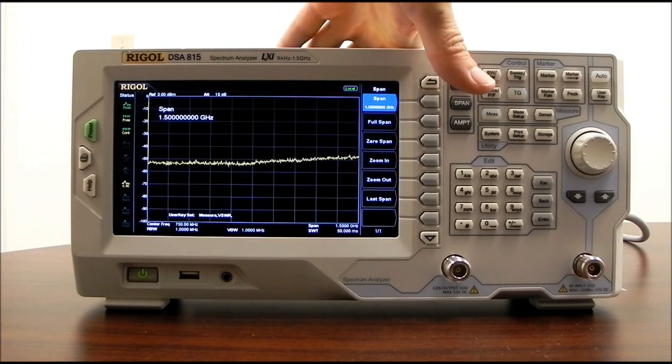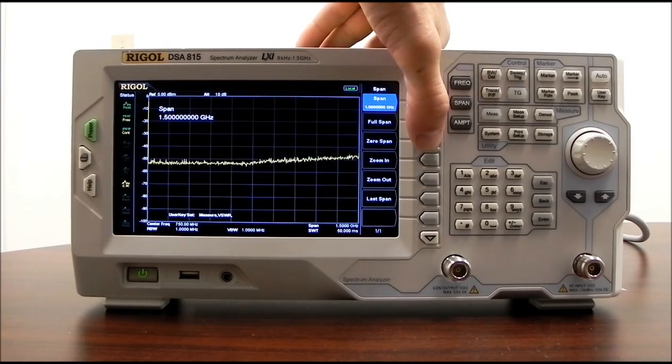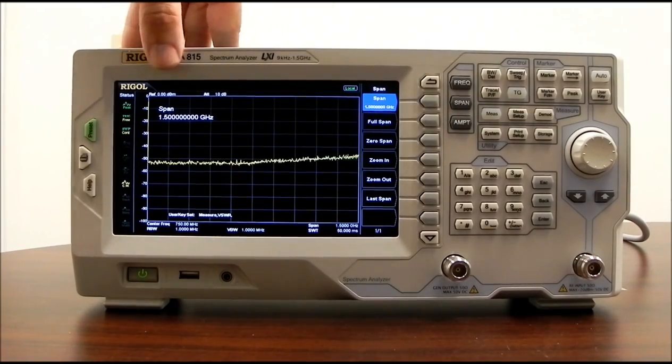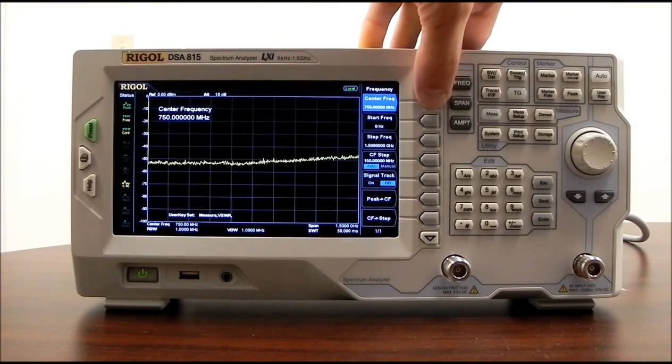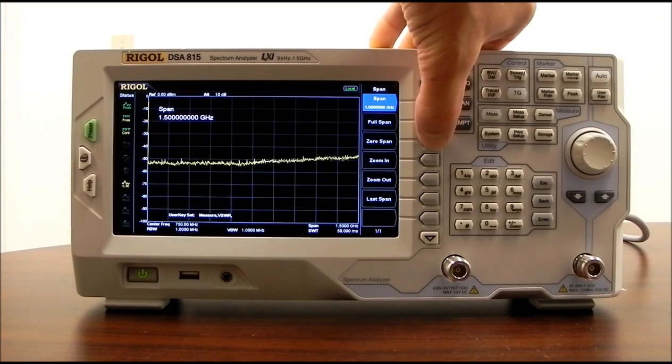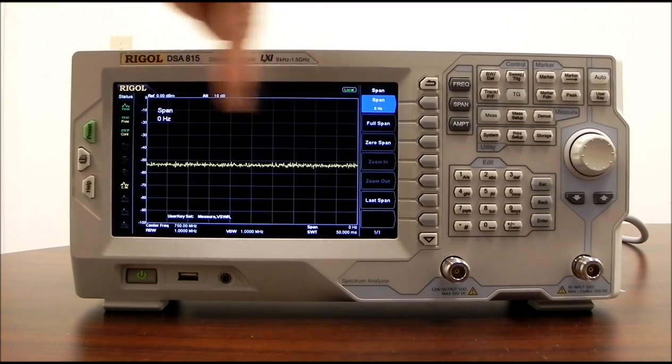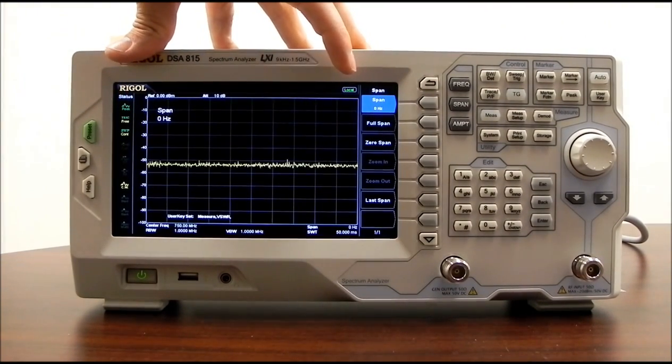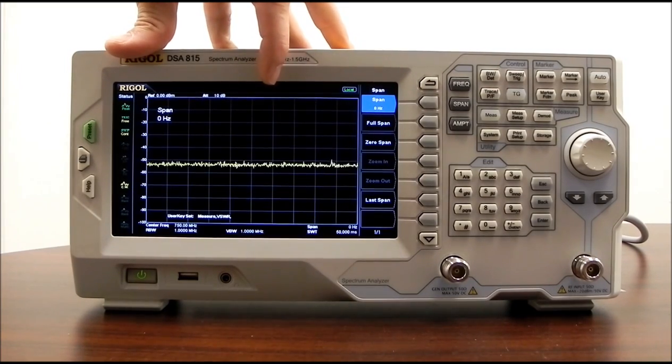We can always get back to full span by pressing that key. But then there's also zero span. Zero span mode works very much like an oscilloscope. It actually takes the center frequency that we've selected. In this case, center frequency is going to be 750 megahertz. If we go back to span and we press zero span at that center frequency, we are analyzing signals that are only at 750 megahertz. And now this is amplitude with respect to time. So you can actually look at time varying signals or the actual modulation of the signal at that particular frequency level.